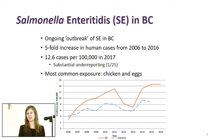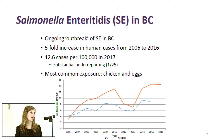One of the biggest challenges with investigating this ongoing SE issue is that 80 percent of people report having consumed chicken and eggs, which are the most likely sources of Salmonella enteritidis. This makes epidemiological linkages and trace-back very, very difficult.